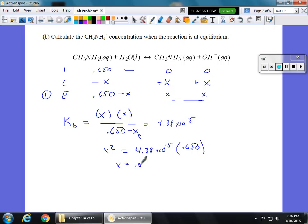x is going to be 0.00534 or 5.34 times 10 to the negative three molar. And you should realize that that's the concentration of just our conjugate acid.